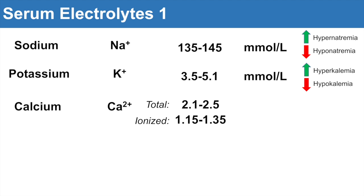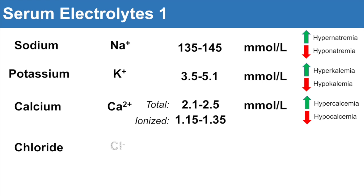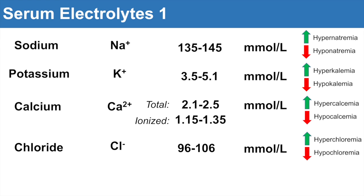With calcium, we can measure either total or ionized. Total is about 2.1 to 2.5 millimoles per liter, and ionized is 1.15 to 1.35 millimoles per liter. Anything higher than the reference range would be hypercalcemia, and anything lower would be hypocalcemia. Chloride is another one, with a reference range of about 96 to 106 millimoles per liter — roughly 95 to 105, an easy one to remember. Anything higher is hyperchloremia, and anything lower is hypochloremia.